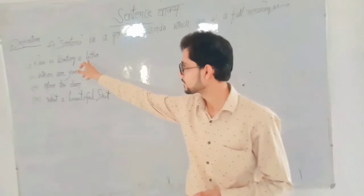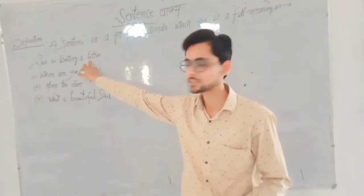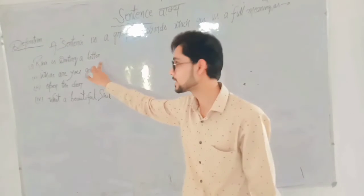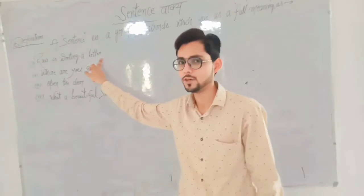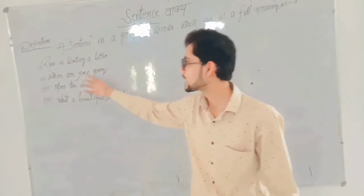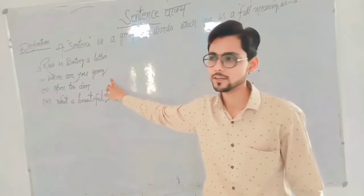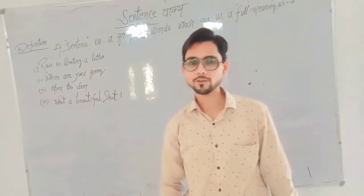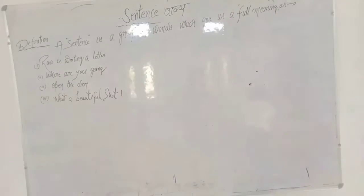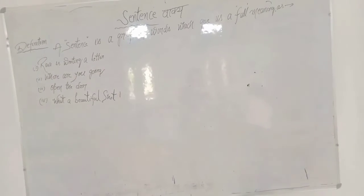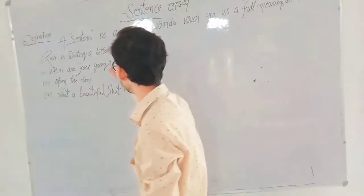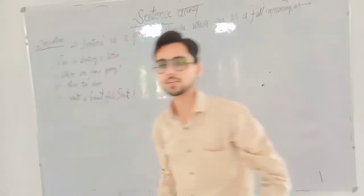So in this way, sentence example number one: 'Ravi is writing a letter.' It is a declarative sentence. And sentence example two: 'Where are you going?' Do you know? It is an interrogative sentence, and it will end with a question mark.